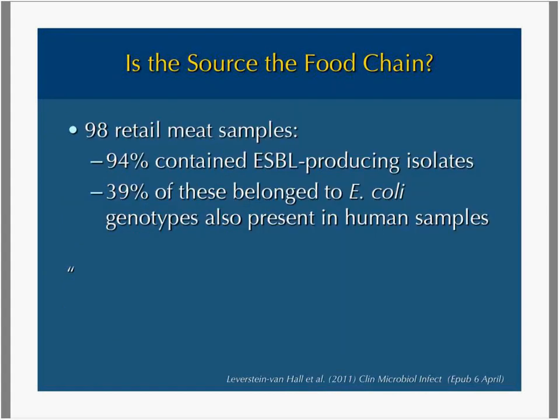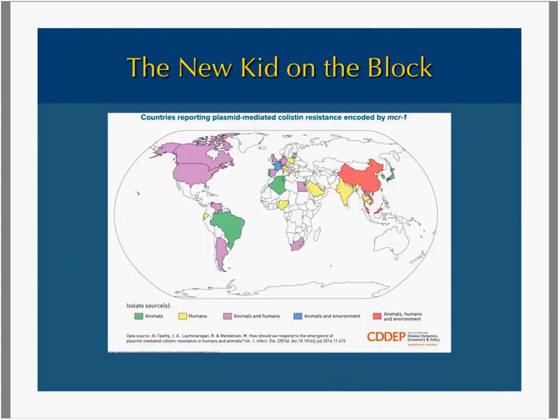A second study looked at 98 retail samples — 94% had ESBL-producing isolates, and 39% belonged to E. coli genotypes that were also present in human samples. And now we have a new kid on the block: a more resistant organism that is plasmid-mediated, meaning it can share this gene across many species, and is resistant to colistin — one of our last-line antibiotics.